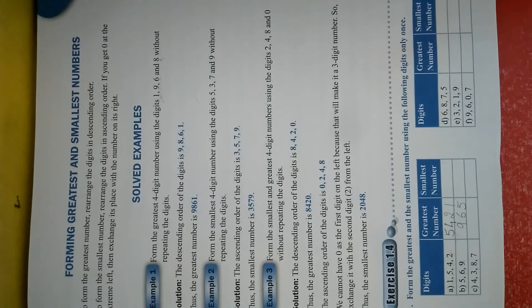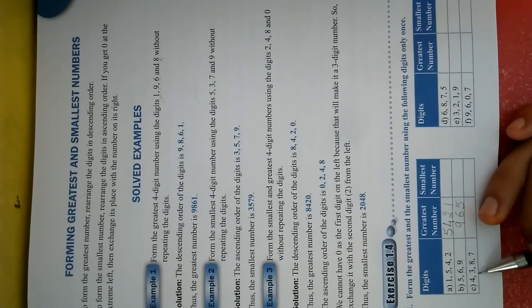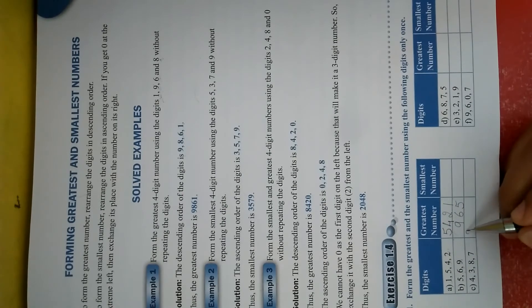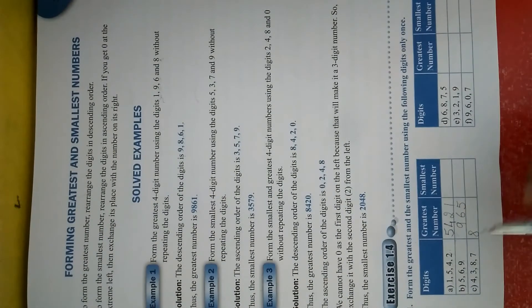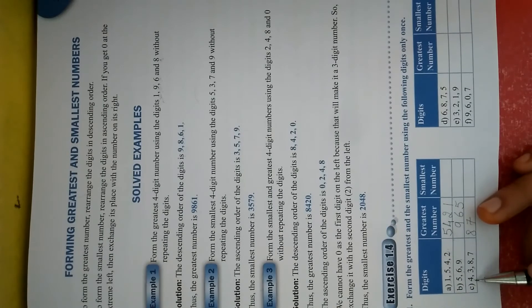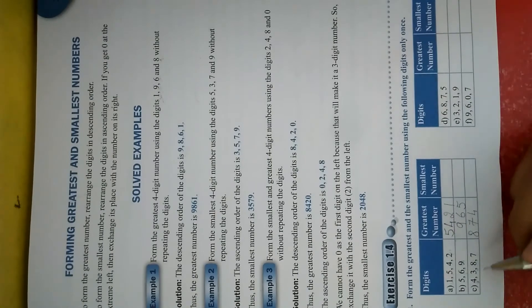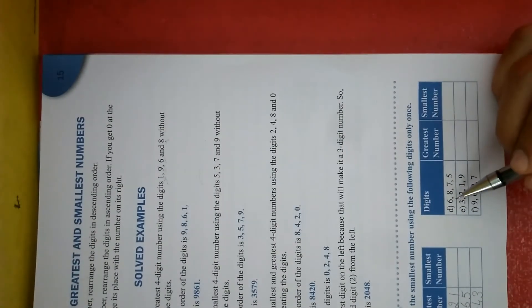Again, for the next question, analyze which is the largest among 4, 3, 8, and 7. It is 8, so write 8 first. Remove 8. Remaining: 4, 3, and 7. Write 7 next. Remove 7. Remaining: 4 and 3. Among these, 4 is larger. Write 4, then finally write 3. So to summarize: when finding the greatest number, you just need to find the biggest digit, write it, remove it, and keep going. Arrange them in decreasing order — big to small.